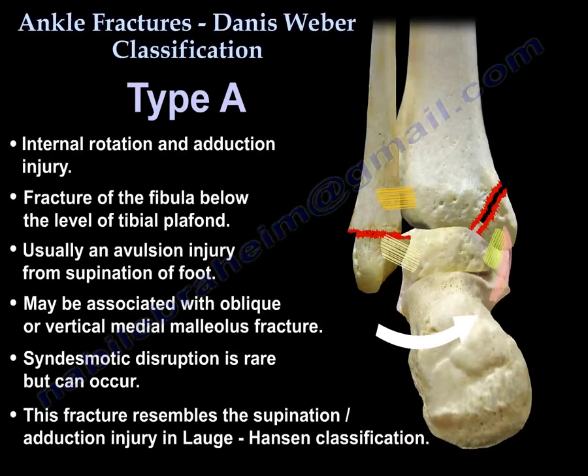Type A is an internal rotation and abduction injury — a fracture of the fibula below the level of the tibial plafond, usually an avulsion injury from supination of the foot. It may be associated with an oblique or vertical medial malleolar fracture. Syndesmotic disruption is rare but can occur. This fracture resembles the supination-abduction injury in the Lauge-Hansen classification.